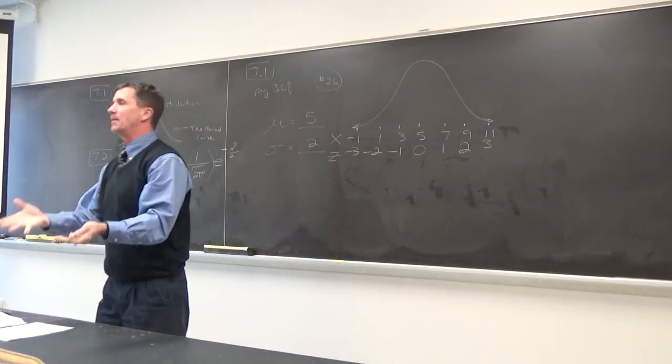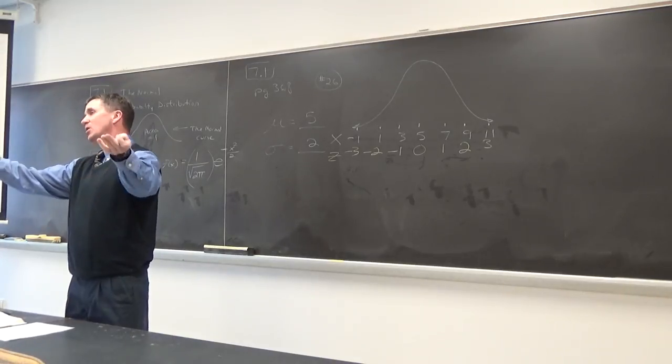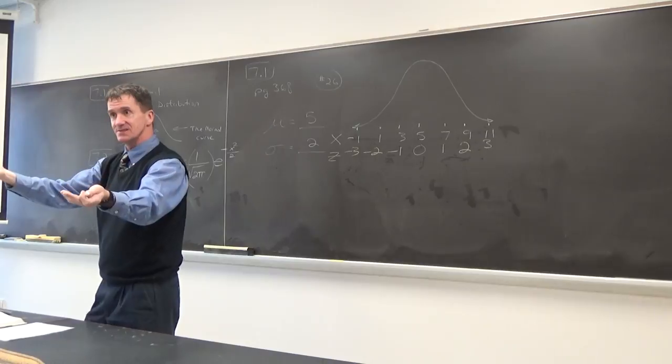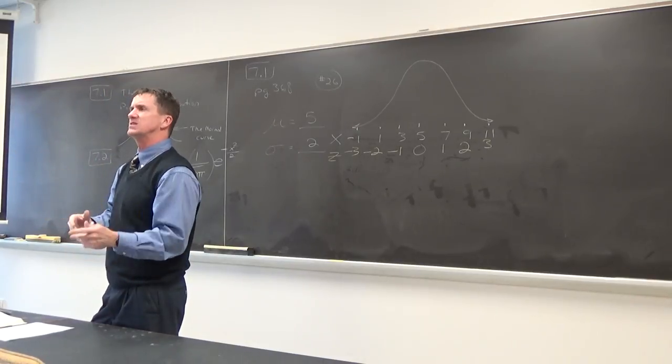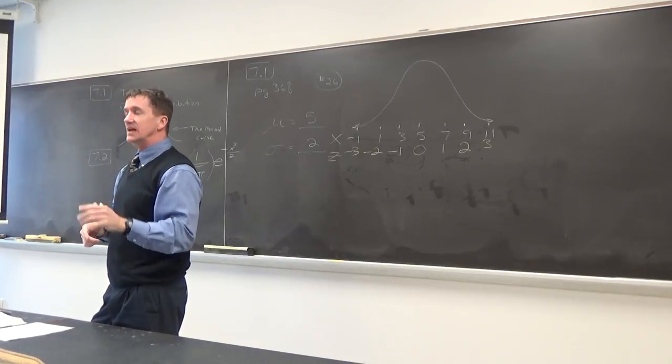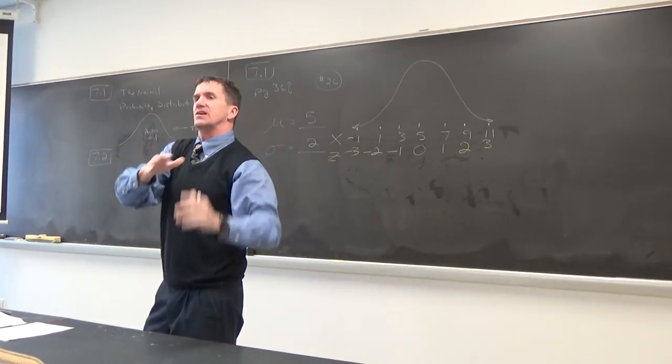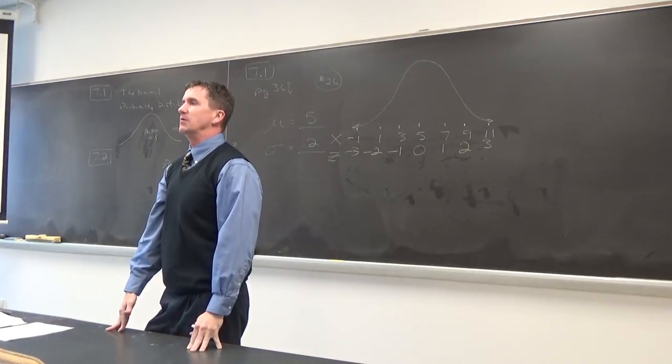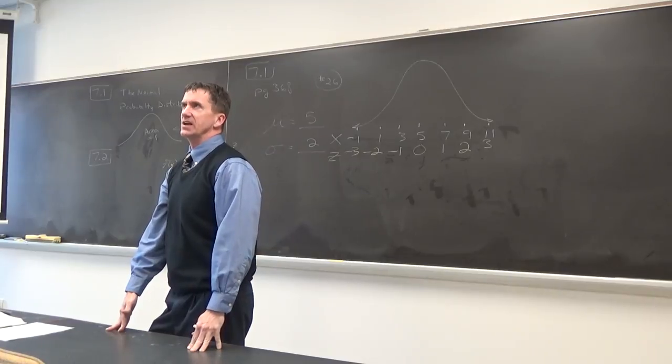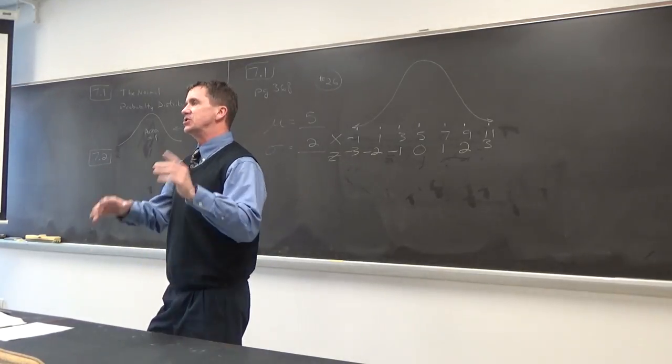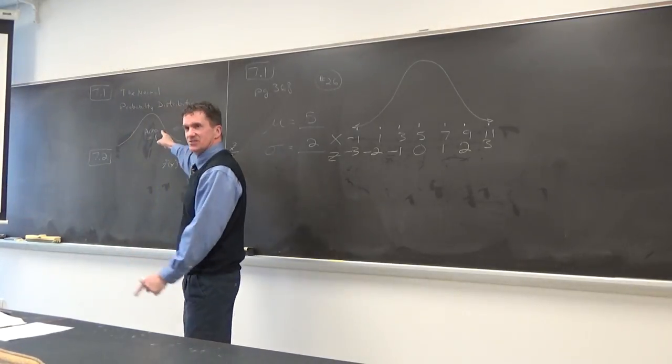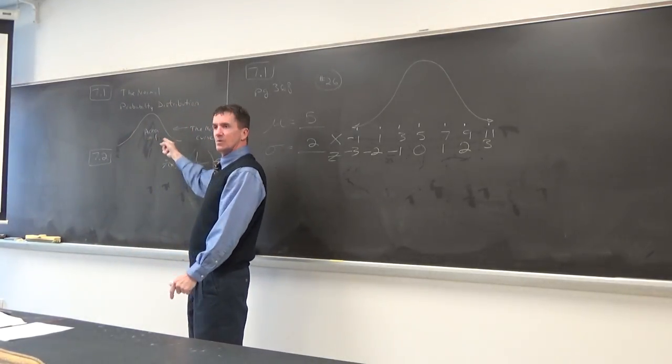What's interesting about this curve is we're going to talk about the area under this curve. You know what the entire area under this curve is if you go from negative infinity to positive infinity? The area under this curve is one. Exactly one. We can use this in terms of probability because probability, what's the most we can get? 1.0, 100%.